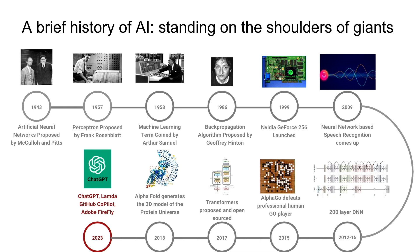AI originally started out in the 1940s as neural networks. Then came Perceptron; the backpropagation algorithm was proposed by Frank Rosenblatt. Later on, the machine learning term was coined by Arthur Samuel. And more importantly, in 1986, the backpropagation algorithm was proposed by Jeff Hinton. This new form of AI was much ignored, but you'll realize why it has come into importance, especially since the last few years.